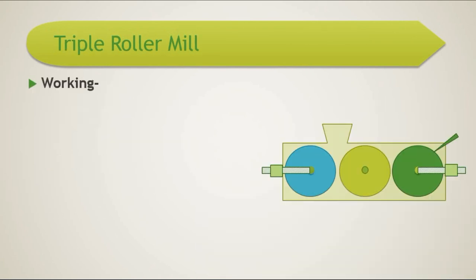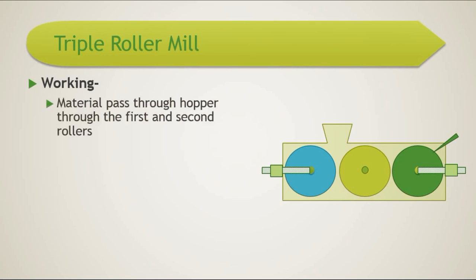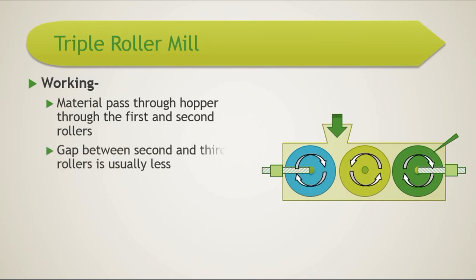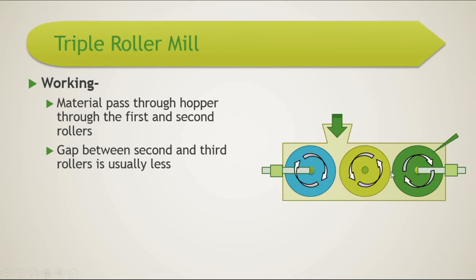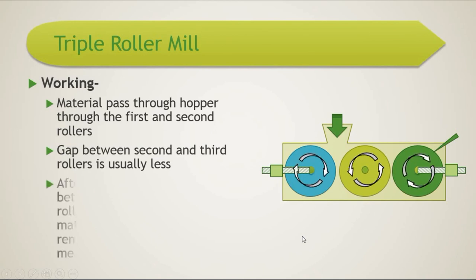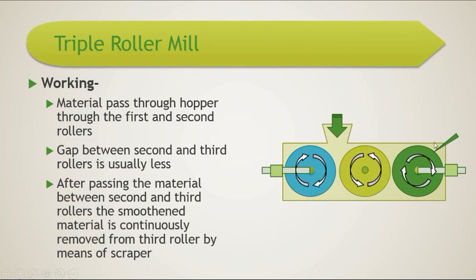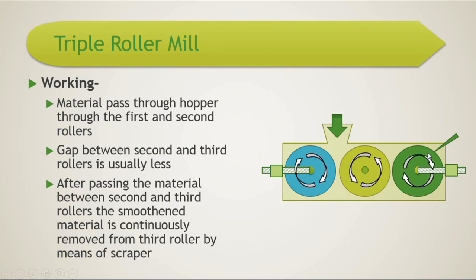The material is allowed to pass through the hopper in between the first and second rollers, then passed between the second and third roller. The gap between the second and third roller is less than the gap between the first and second roller. After passing through the second and third rollers, the homogeneously mixed material is continuously removed with the help of a scraper, which collects the material into a receiver from the smooth surface of the third roller.